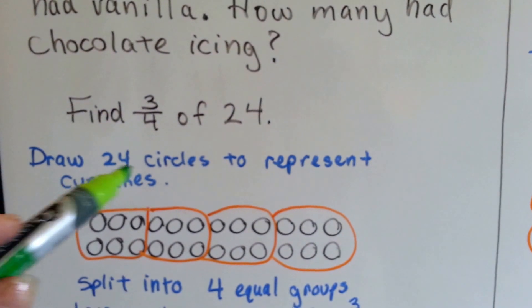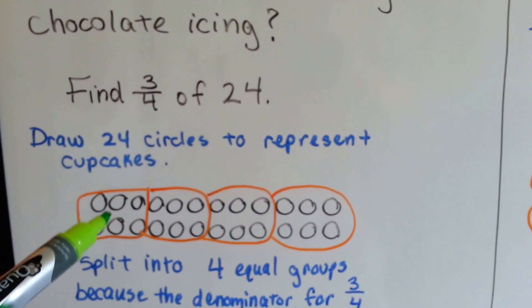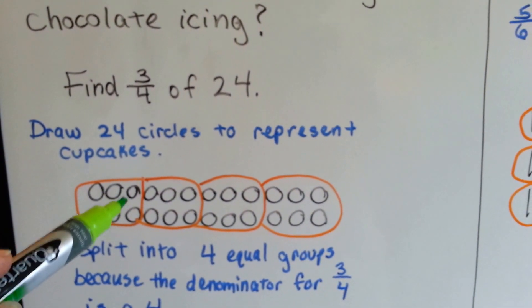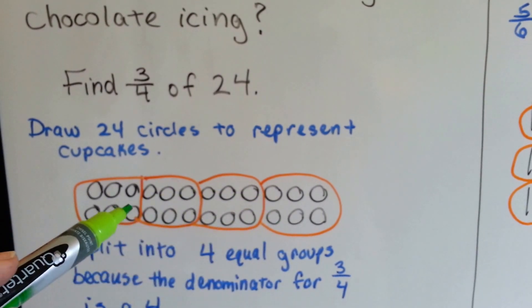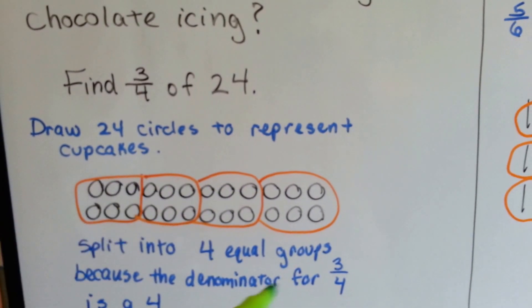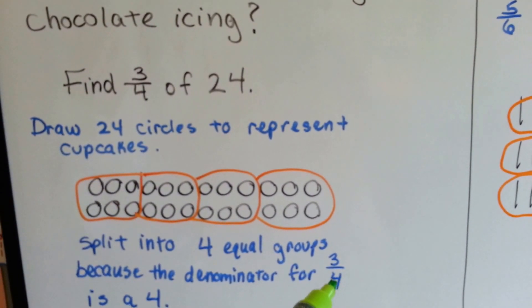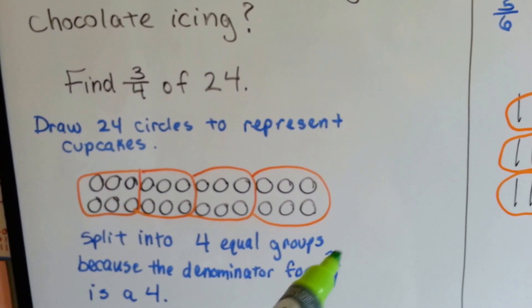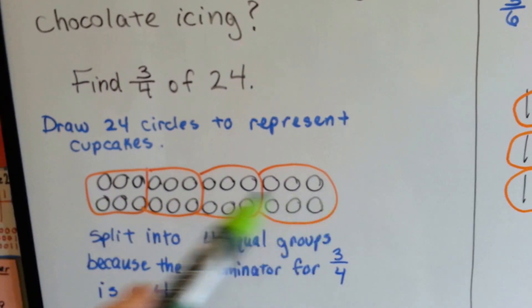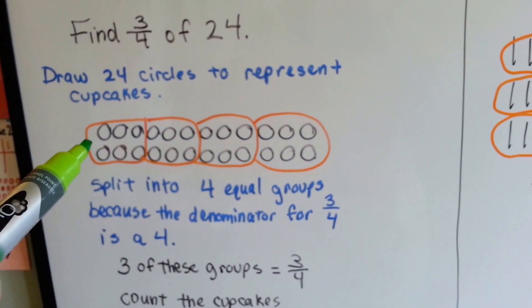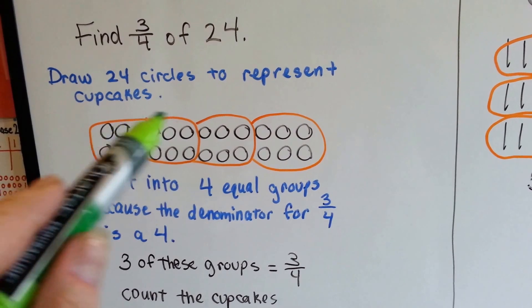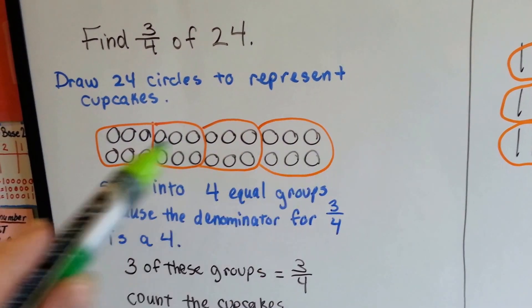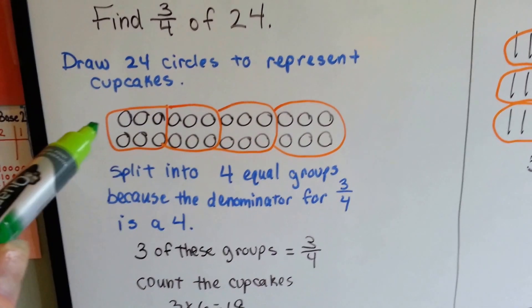So what we do is we draw 24 circles to represent cupcakes, and we split them into 4 equal groups. Why did we make 4 equal groups? Because the denominator for three-fourths is a 4. And 3 of the 4 groups are chocolate, so we need 4 equal groups. So we end up circling 6 four times. So there's 6 in each of our 4 groups.